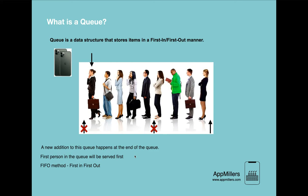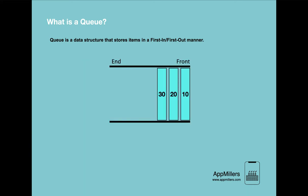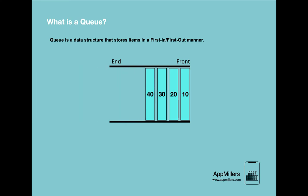If we compare this real-life queue behavior with the queue data structure, we see that in the queue data structure we also follow the FIFO method — whichever element comes to the queue first goes out first. So if we want to insert 40 into this queue, we have to insert it at the end. If we want to insert the next element, we again insert it at the end. We cannot insert it anywhere between the existing elements.